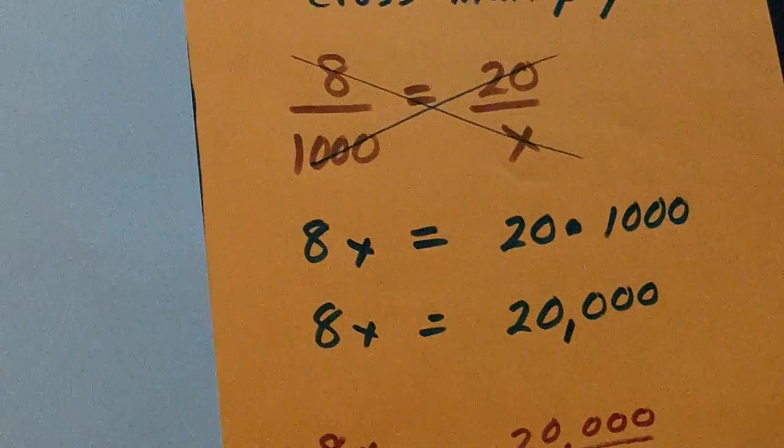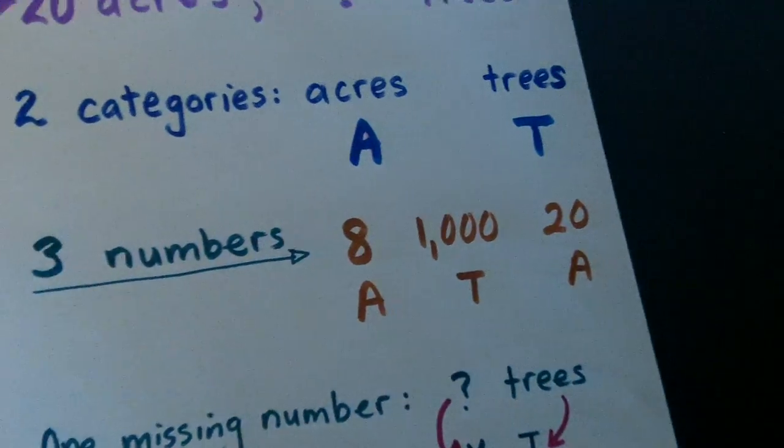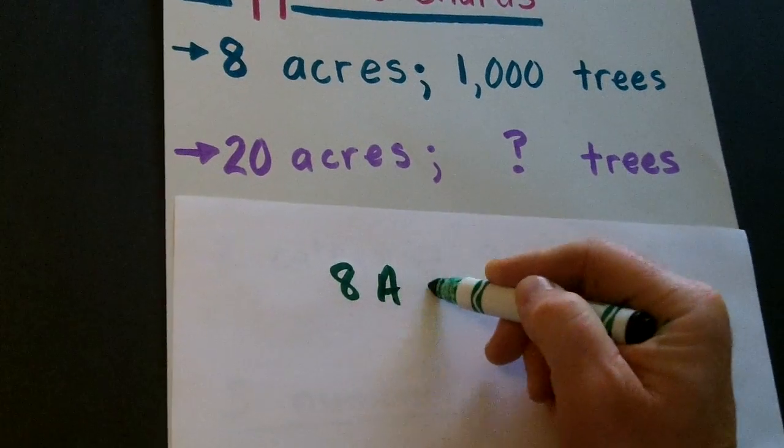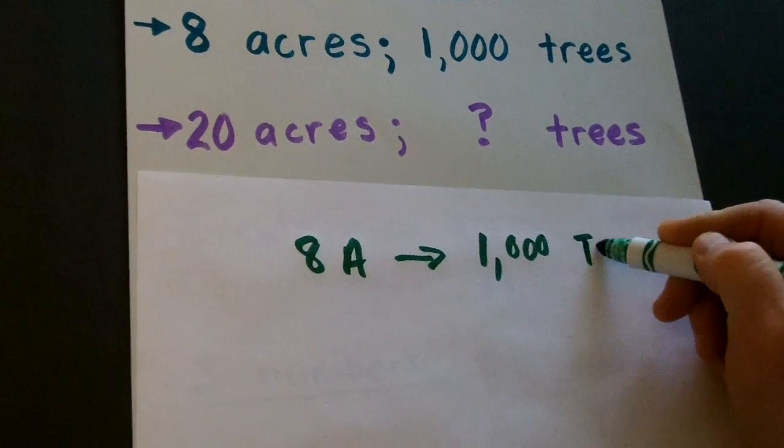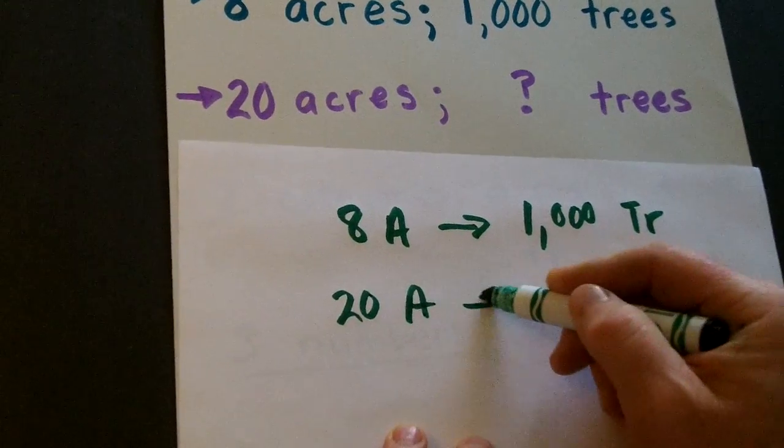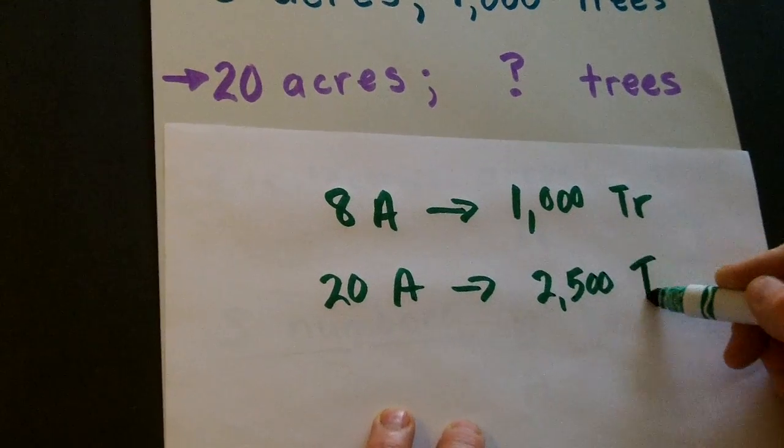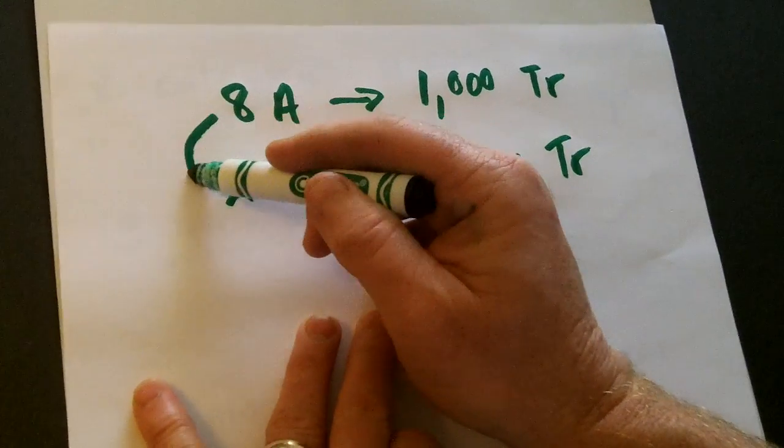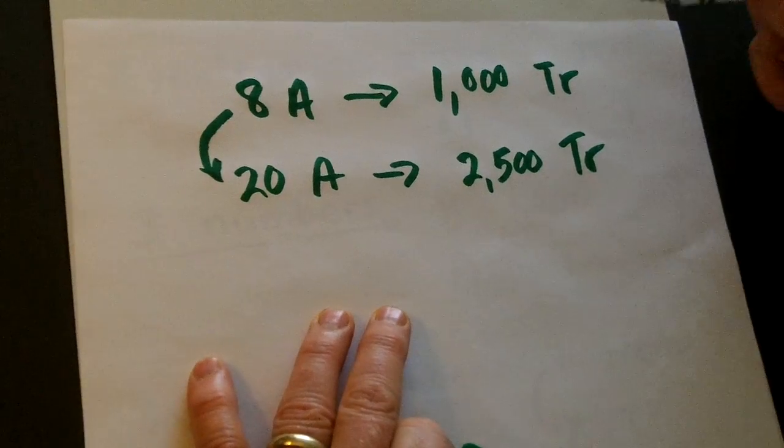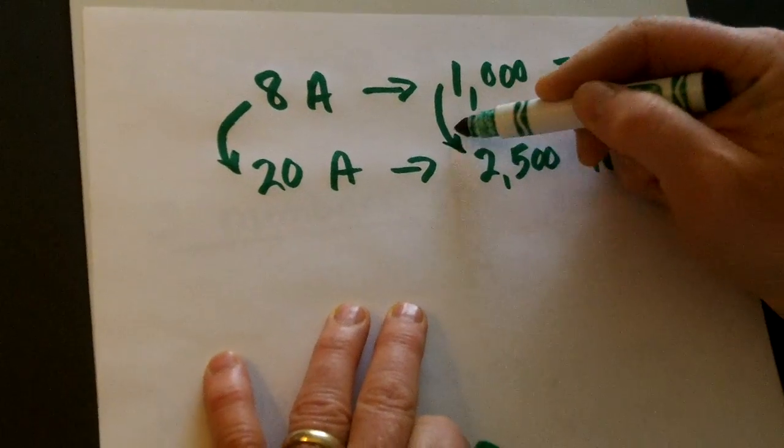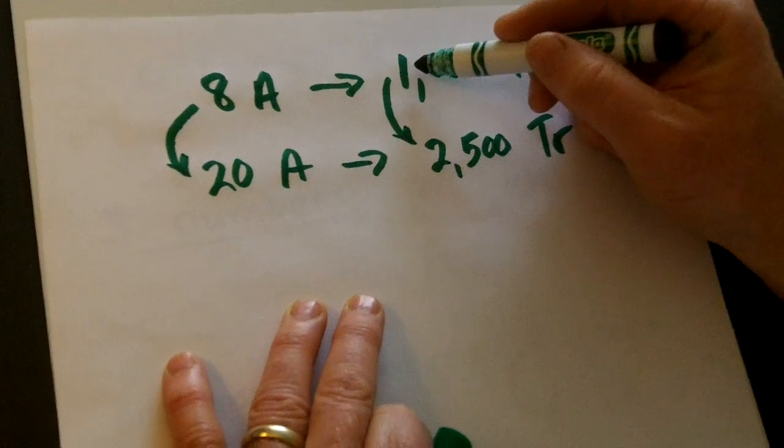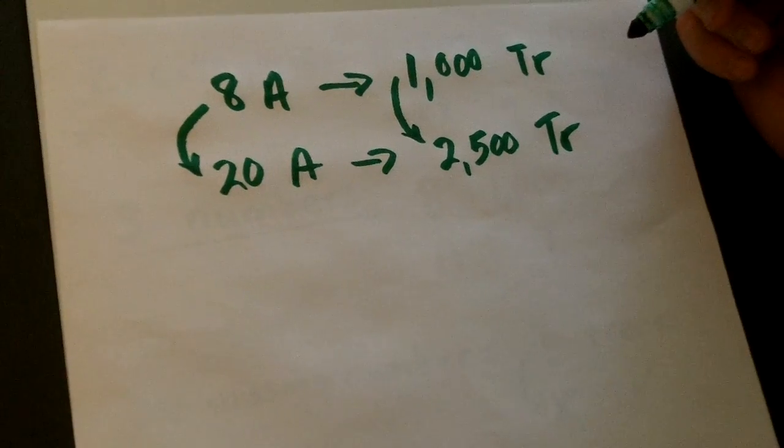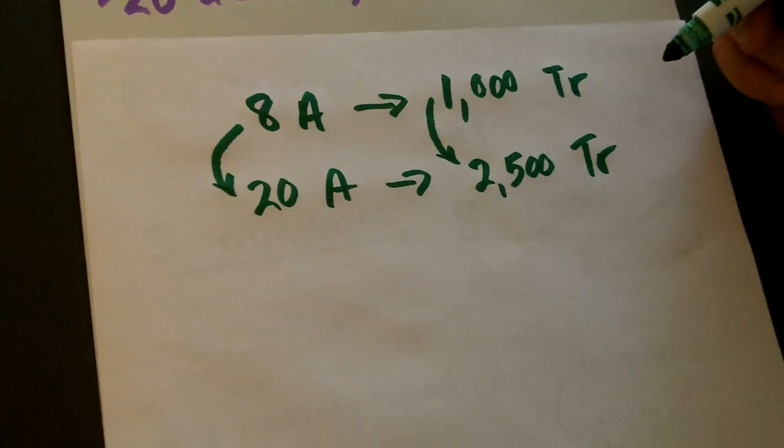So, if we go back to our original problem, let's see if this makes sense. 8 acres produces 1,000 trees. 20 acres produces 2,500 trees. Now, is 20 a little more than double of 8? Yeah. Is 2,500 a little more than double of 1,000? Yes. So, our answer makes sense. So, that's how proportion problems work. Thank you.